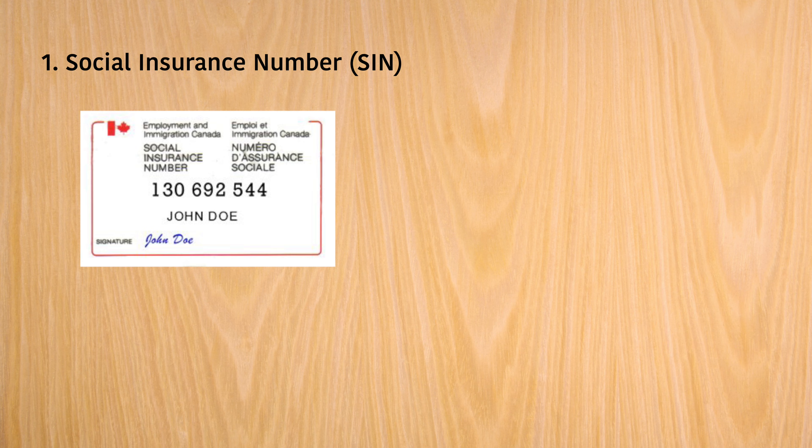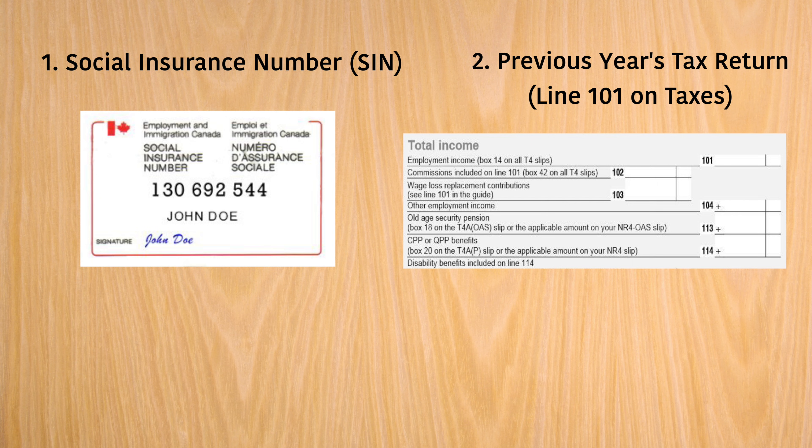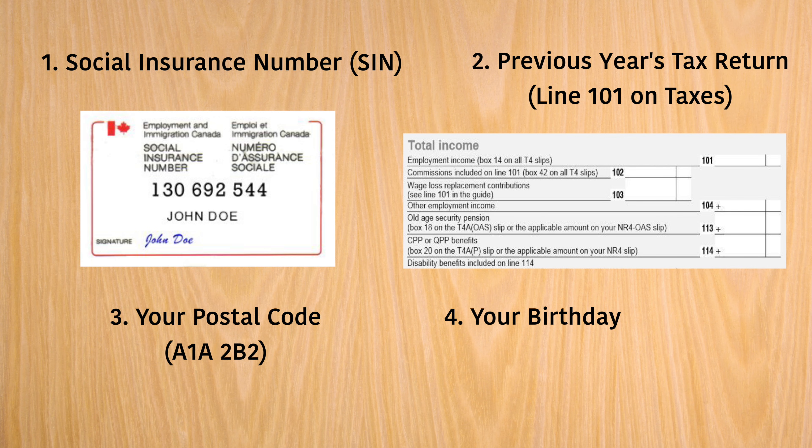I'm going to select option one, but before proceeding you'll need four specific items to complete this registration. It's a one-time thing, so let's get it over with together. These items will help validate and protect your identity on the site. First, you'll need your Social Insurance Number or SIN card. Then you'll need last year's tax return because they'll ask for line 101. You'll also need your postal code and your date of birth. If you don't have any of these items, go ask your parents or check your files — pause this video if you need to.